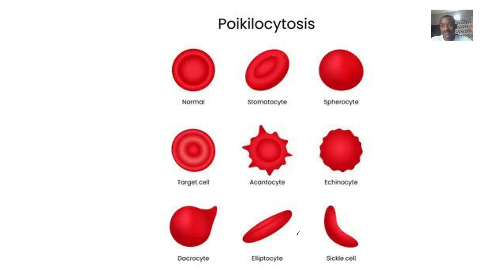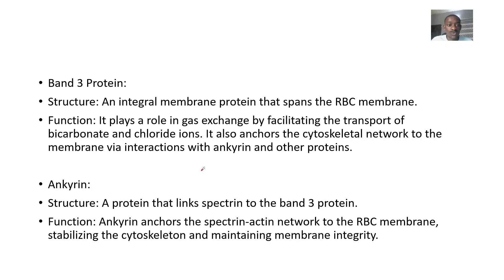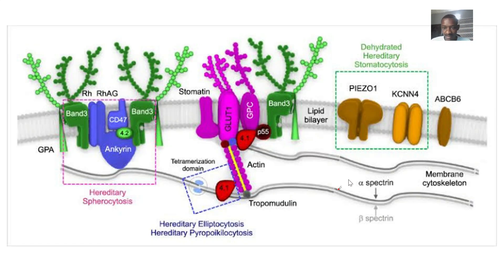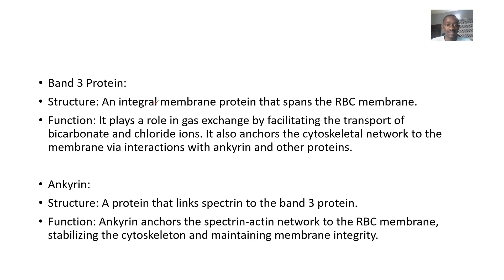These are the different types of shapes of red blood cells. Now we have band 3 proteins. Band 3 proteins are integral membrane proteins that span the red blood cell membrane. They play a role in gas exchange by facilitating the transport of bicarbonate and chloride ions. Band 3 also anchors the cytoskeletal network to the membrane via interactions with ankyrin and other proteins.